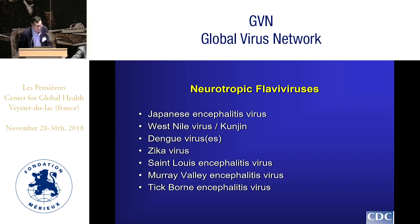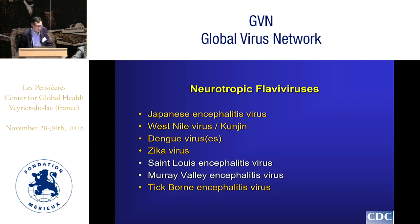Here is a list of the neurotropic members of the flavivirus family. You can see some viruses that are fairly well known: Japanese encephalitis virus, West Nile and Kunjin — which is related to West Nile — Dengue, Zika virus, St. Louis, Murray Valley, and tick-borne encephalitis. I should have put Powassan up here as well. In this talk we'll predominantly cover Japanese encephalitis, West Nile, Dengue, Zika virus, and if time permits, tick-borne encephalitis virus.